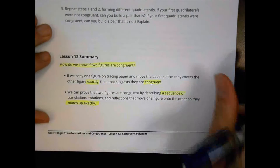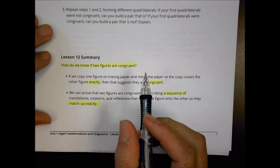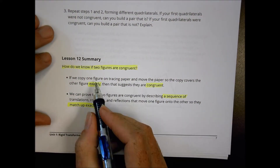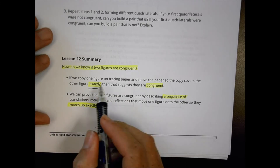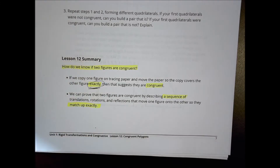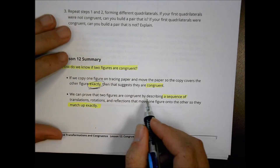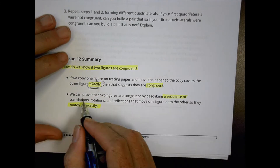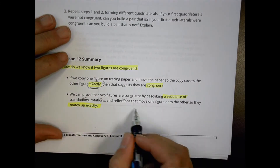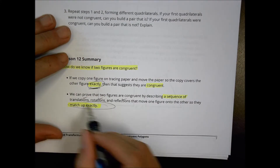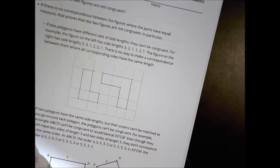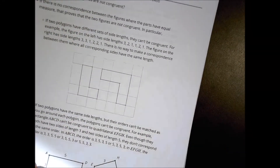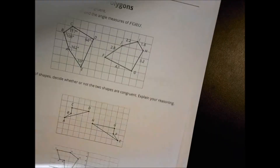In summary, to find out if a figure is congruent, it needs to be exactly like the other one — exactly like it. Same length, same angles, everything's going to be the same. As long as you have a sequence of translations, rotations, and reflections that move things around and they match up exactly, you're going to have a congruent shape. If it's not going to be exact, it's not congruent.